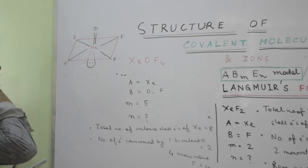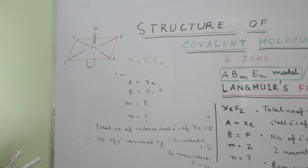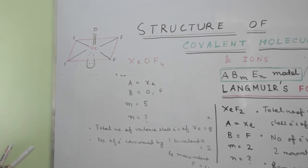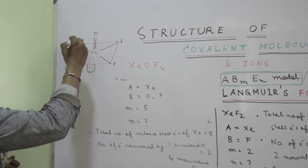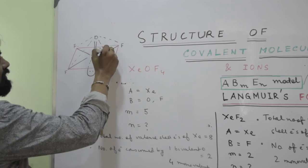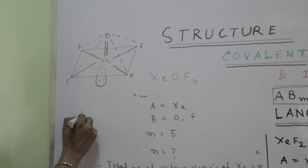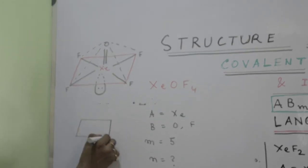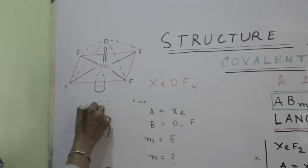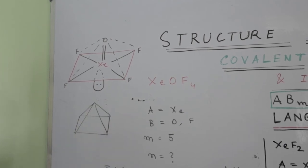Now what will be the structure of this molecule? Now it is distorted octahedral, but since we are more interested about the shape of the molecule, so if I join this, what type of shape you are getting? On a square you can see a pyramid like this. So it is square pyramidal.